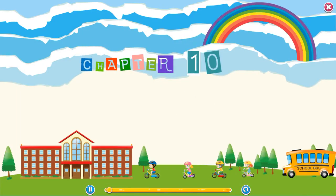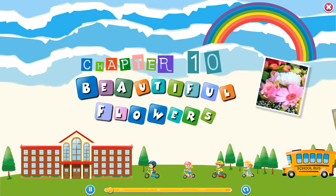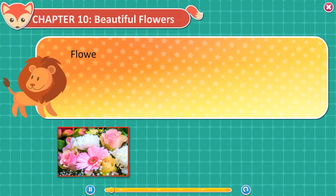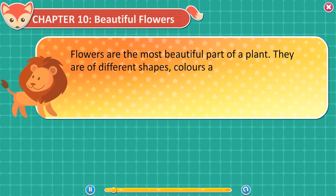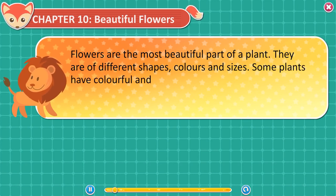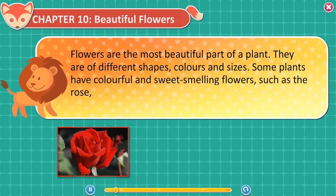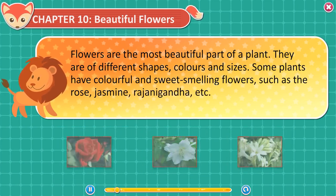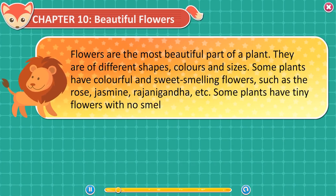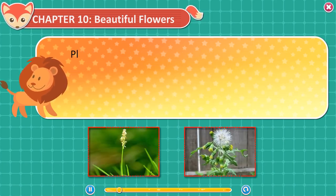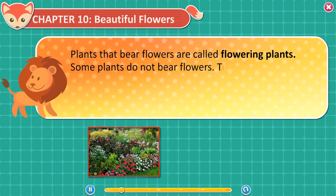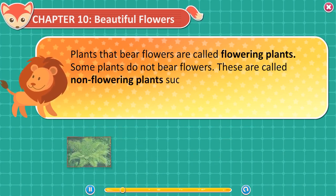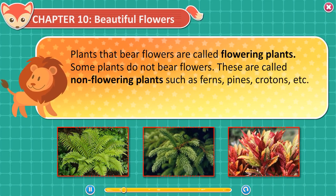Chapter 10: Beautiful Flowers. Flowers are the most beautiful part of a plant. They are of different shapes, colors, and sizes. Some plants have colorful and sweet-smelling flowers such as rose, jasmine, and rajnigandha. Some plants have tiny flowers with no smell such as grass and weeds. Plants that bear flowers are called flowering plants. Some plants do not bear flowers — these are called non-flowering plants such as ferns, pines, and crotons.